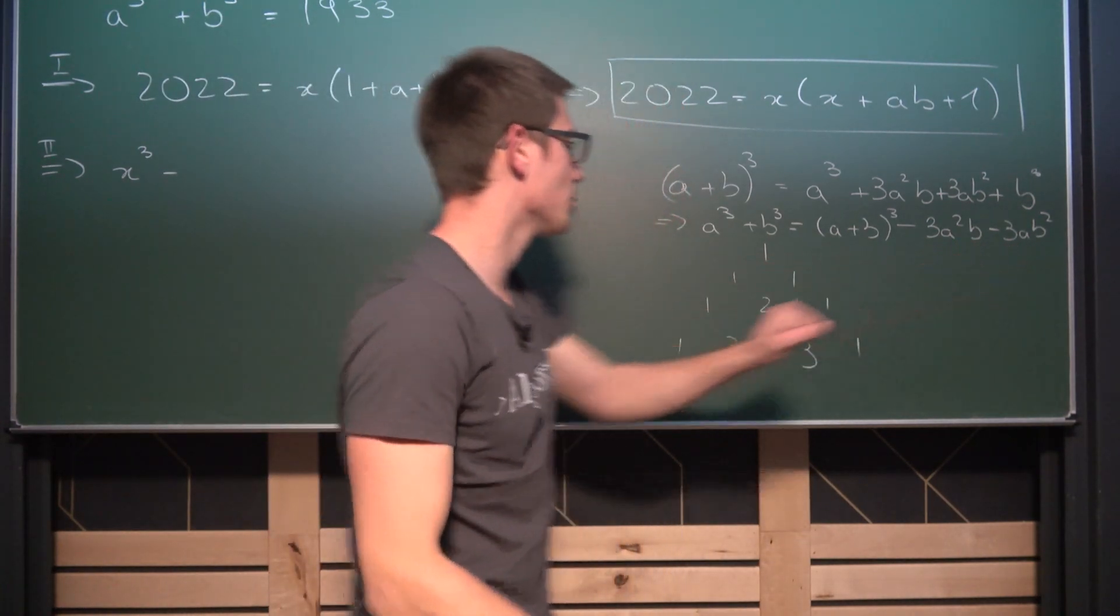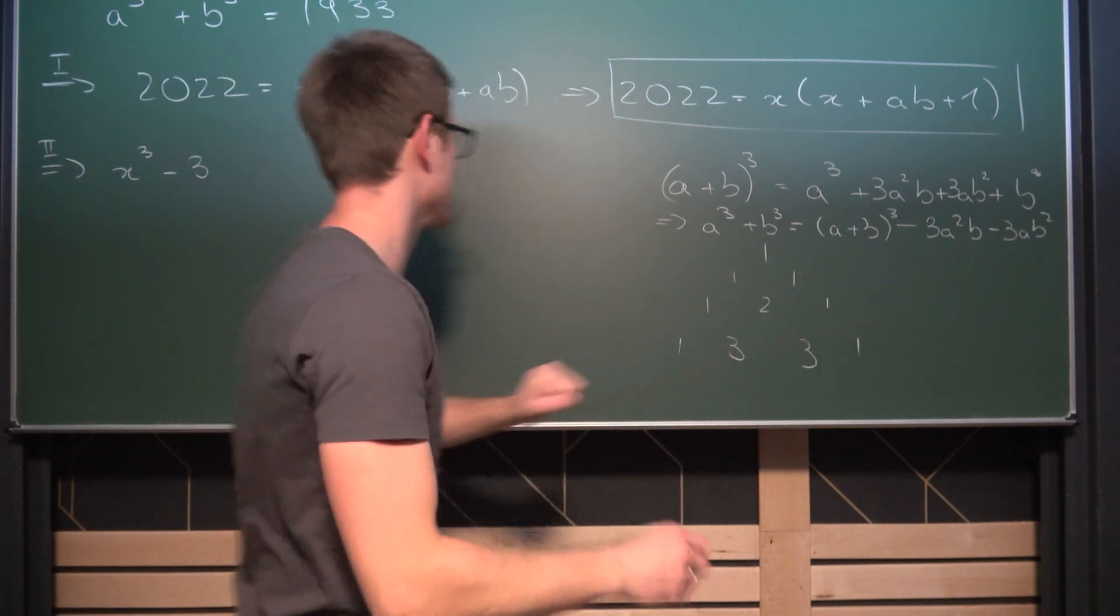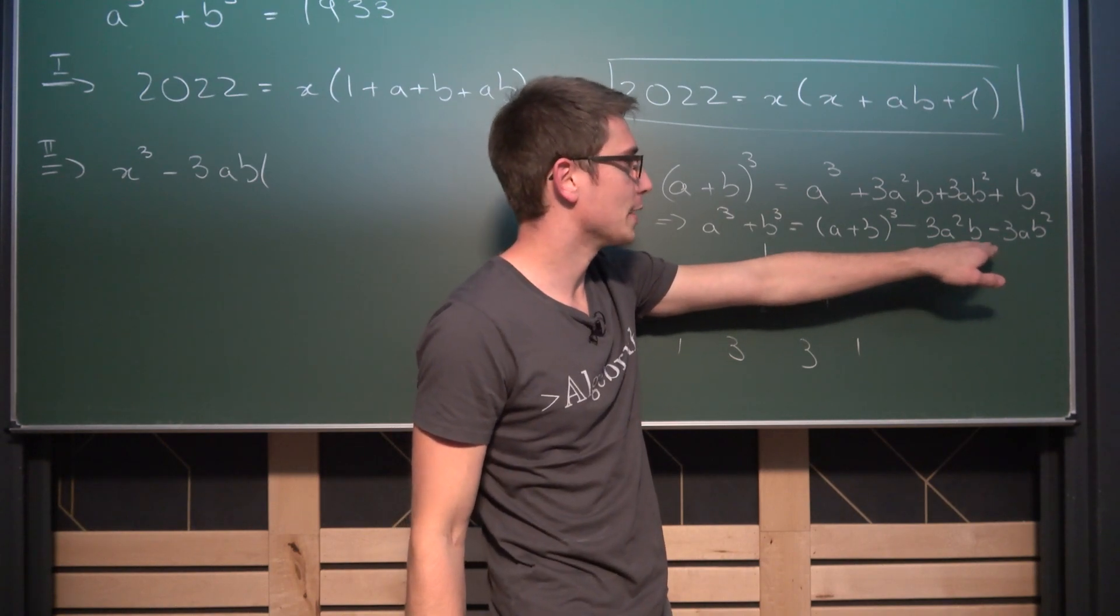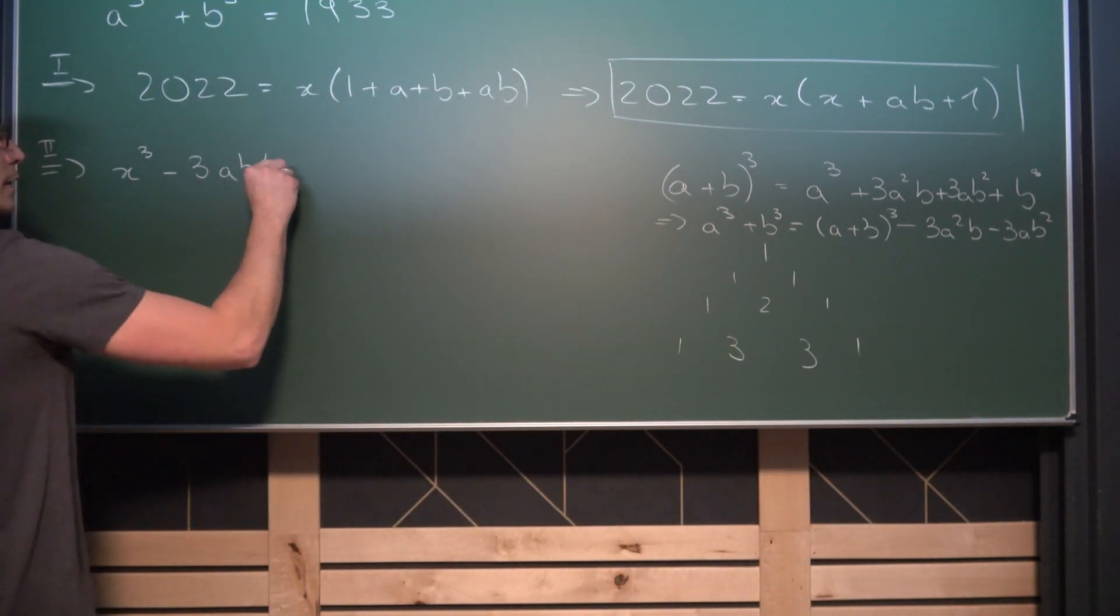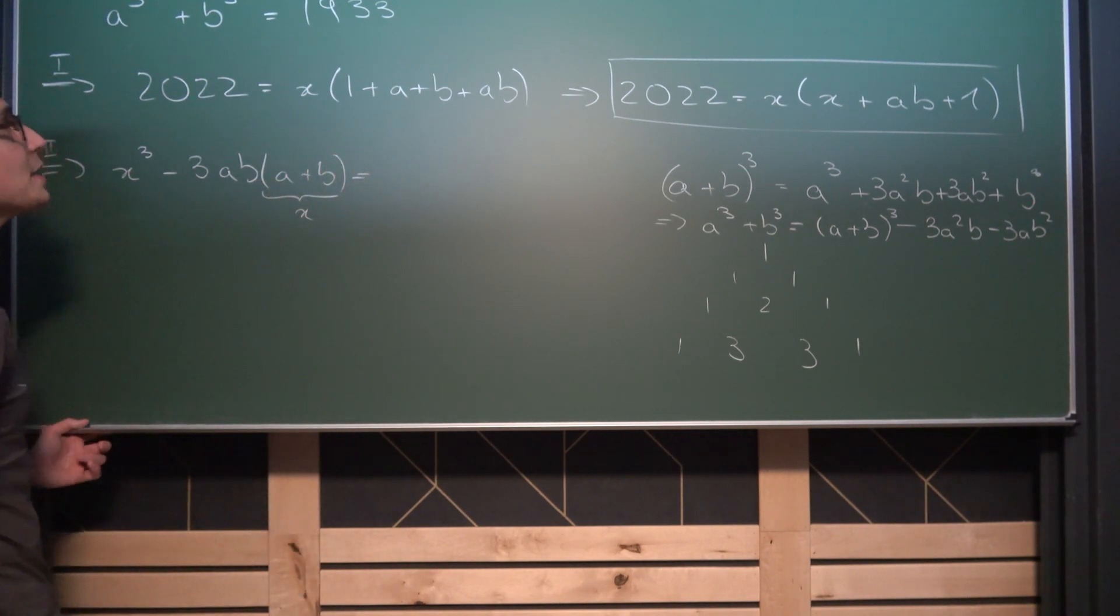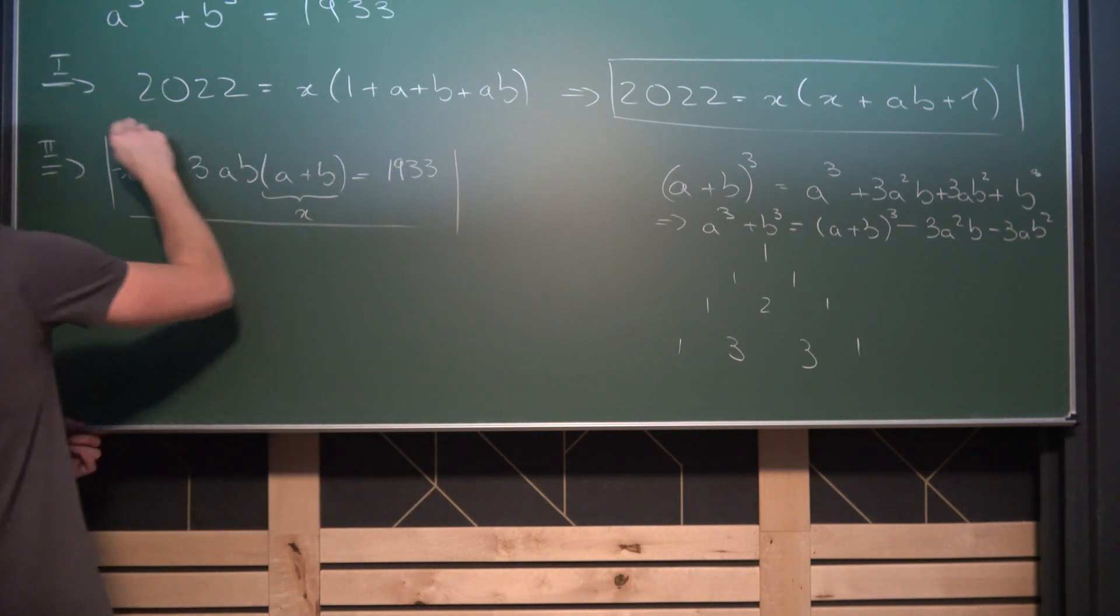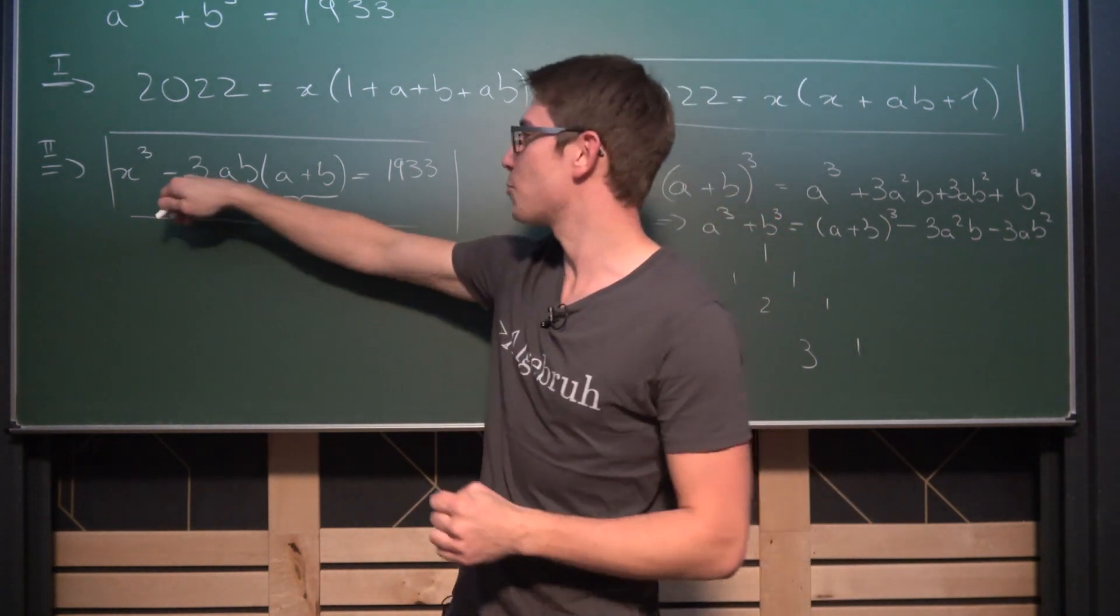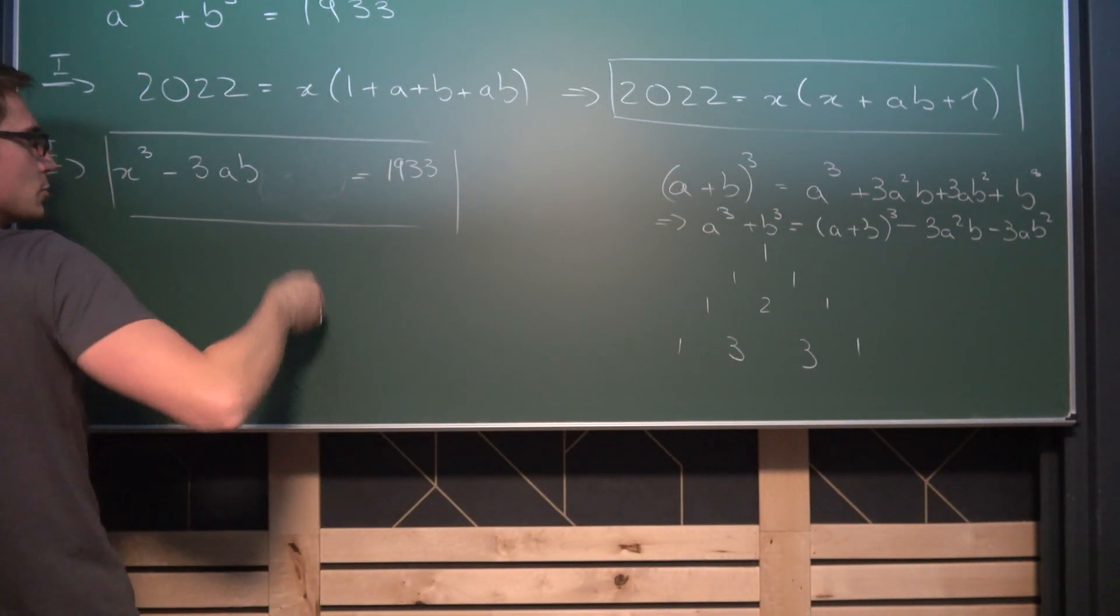So for the second equation what we are going to get that a cubed plus b cubed is the same as x cubed and then we are going to get minus. Now take a look at this. We have 3 as a common factor. We can factor this out. What we also have as a common factor is a and also b. So we can also factor this out ab. Now what is going to be left once we multiply everything out once again with the parentheses. On the first part what is going to be left is a and on the second part ab is going to be left which is a plus b. And the cool thing is a plus b is the same as x once again. And all of that is equal to 1933. And this right here is our second equation namely that x cubed minus 3ab times x is equal to 1933. Let me erase this right here a tiny little bit and let's put this into a nice form.